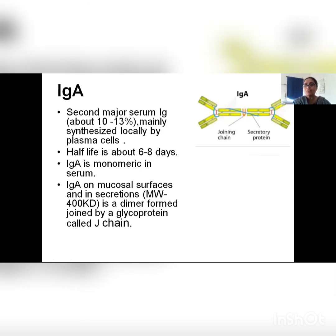The second major serum immunoglobulin is IgA, about 10 to 13%. It is synthesized locally by plasma cells and has a half-life of six to eight days. IgA is monomeric in serum. Another form of IgA is joined with a joining chain.